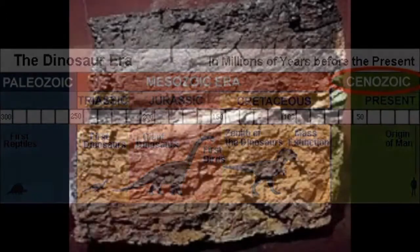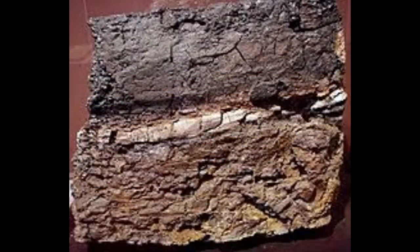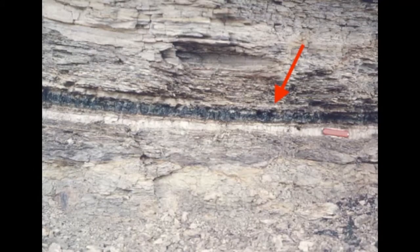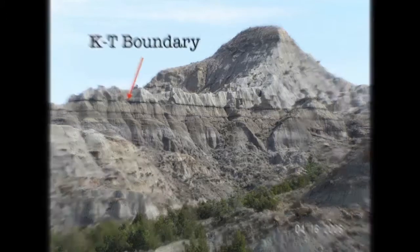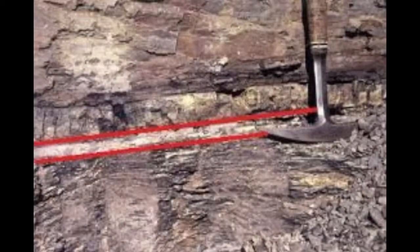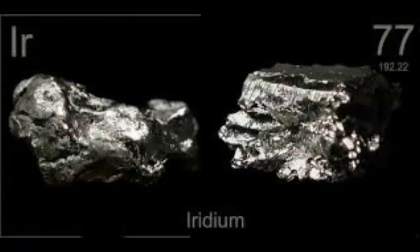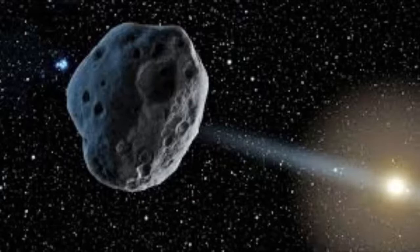In the geologic record, the KT Event is identified by a narrow dark layer of sediment called the KT Boundary, which can be found throughout our planet in terrestrial and marine rocks. The thin boundary clay shows high levels of the metal iridium, which is rare in the Earth's crust but abundant in some asteroids.